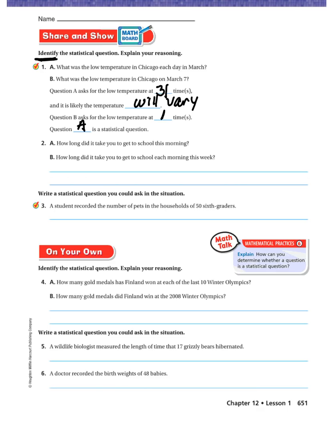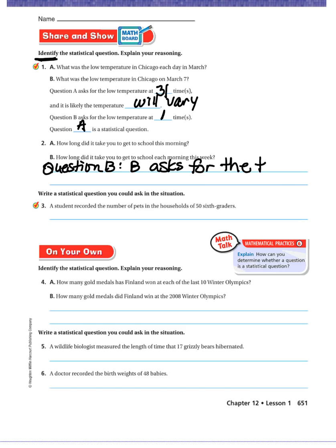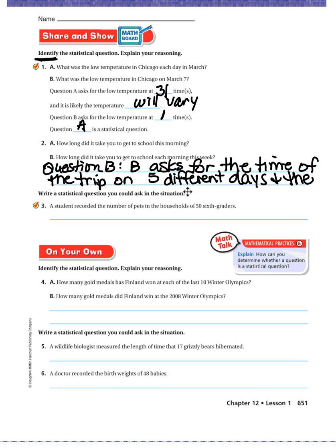Number two. Option A: How long did it take you to get to school this morning? Option B: How long did it take you to get to school each morning this week? You need to choose which is the statistical question. The answer is Question B, because it asks for the time on five different days, and the times will most likely vary.